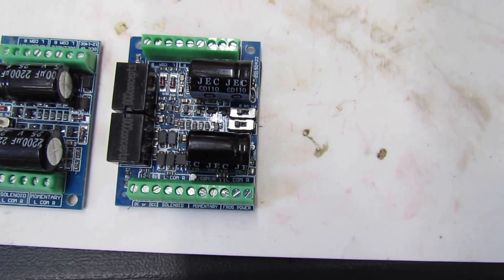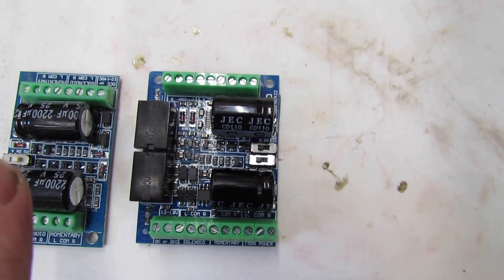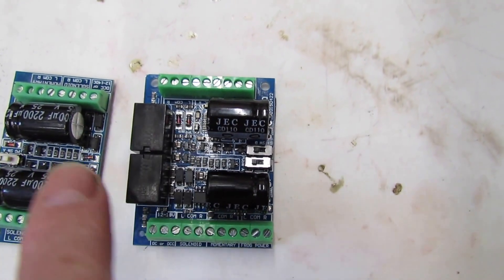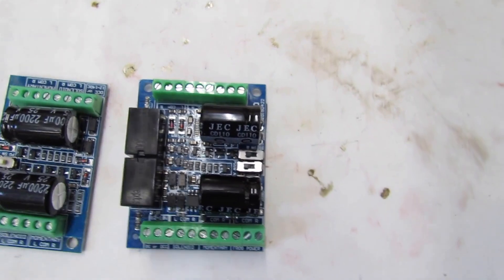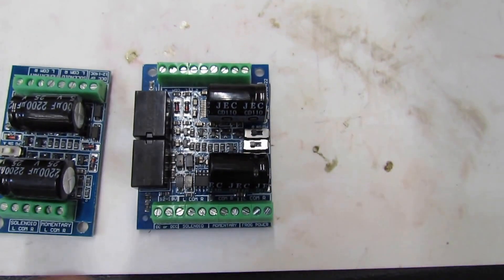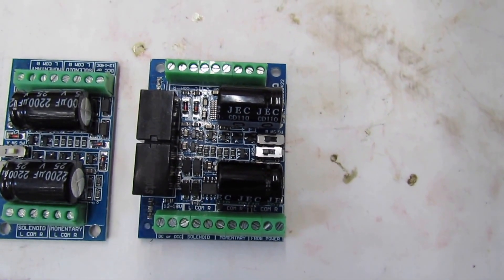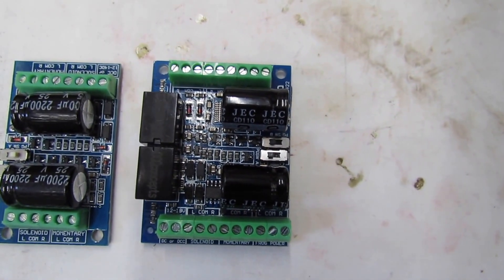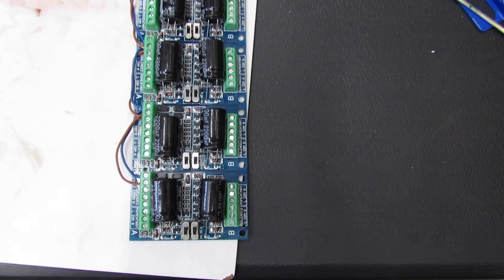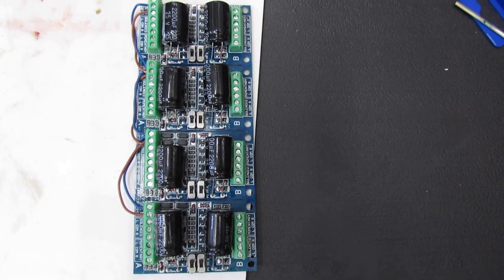Carrying on from the last bit, this is the two different controllers. They're both the two versions. You can see the one on the left is the older one and the one on the right is the newer one with the point switch built in.